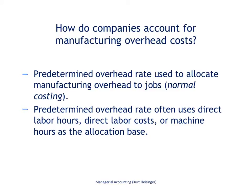How do companies account for manufacturing overhead costs? Most companies use what is called a normal costing system, which means we use a predetermined overhead rate rather than actual data to apply overhead to jobs. A predetermined overhead rate often uses direct labor hours, direct labor costs, or machine hours as the allocation base to allocate overhead to individual jobs.